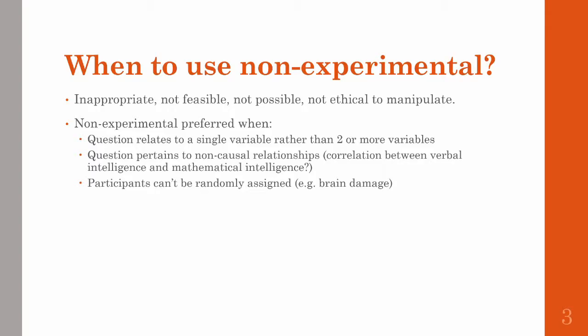Non-experimental research is preferred in cases where your research question relates to one variable instead of two or more, or when your question pertains to a non-causal relationship. An example would be the correlation between verbal intelligence and mathematical intelligence — they are correlated, but you can't manipulate someone's intelligence. It just kind of is what it is.